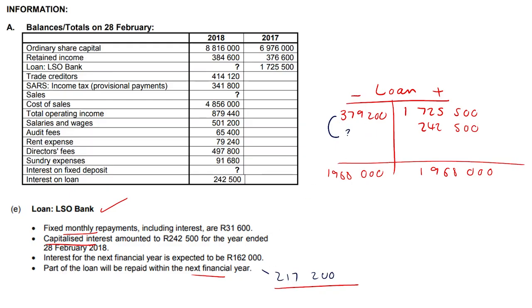The 217,200 goes in here, and the balancing figure is 1,371,600. That's it for the question. The 1,371,600 plugs straight into the loan total on your balance sheet. The interest expense amount is 242,500 — that goes straight into your income statement. General ledger calculations are fine and will be marked accordingly. Thanks for watching.